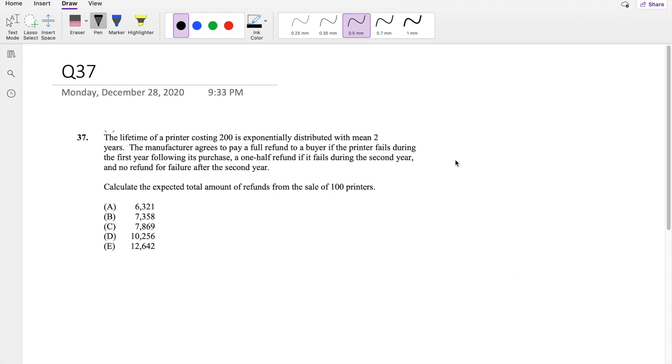Okay, assuming you already attempted it, let's dive right in. So the lifetime of a printer costing $200 is exponentially distributed with a mean of 2 years. The manufacturer agrees to pay a full refund if the printer fails during the first year of purchase. So from 0 to 1 year, they're going to pay the full amount, $200.